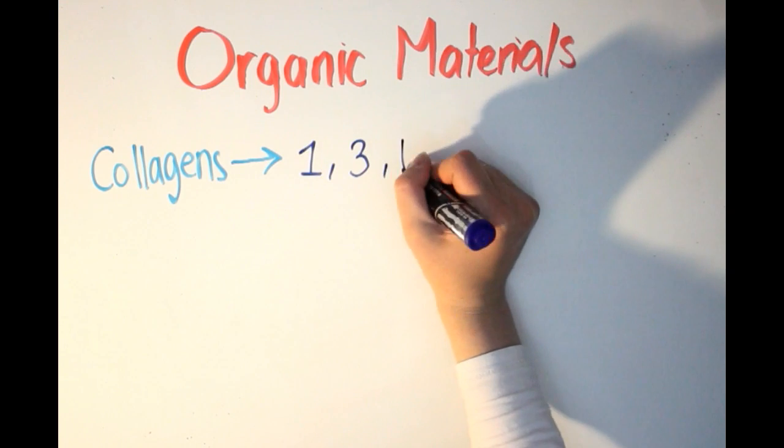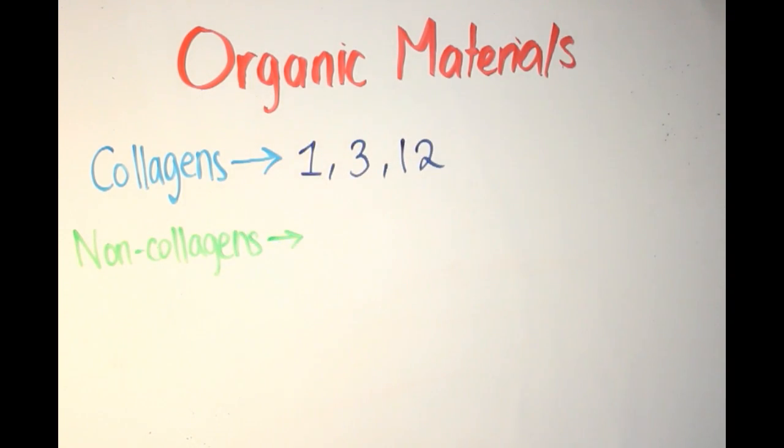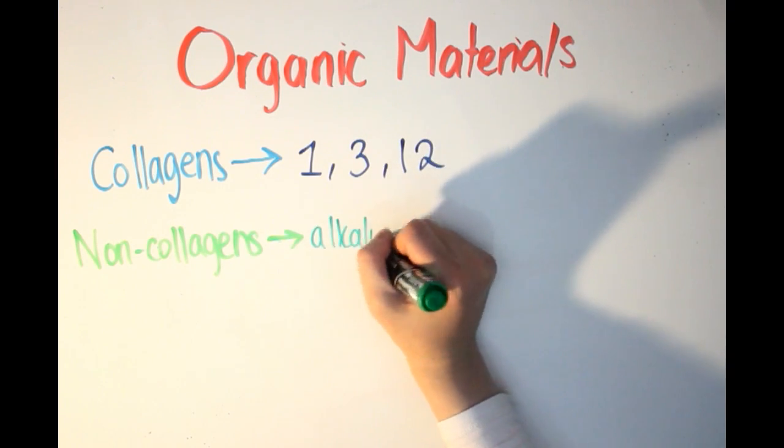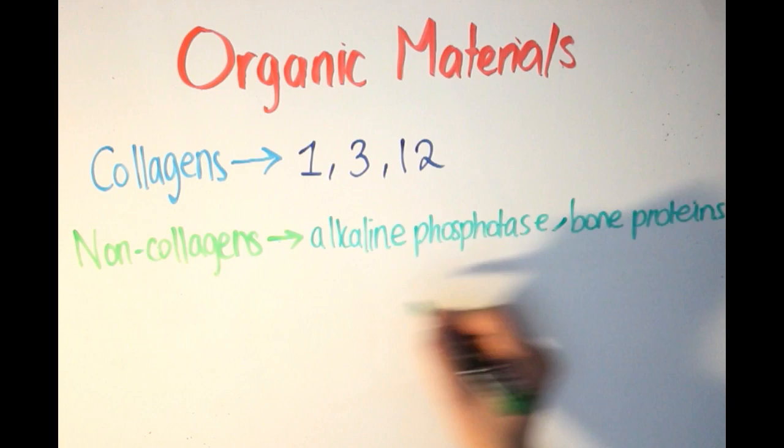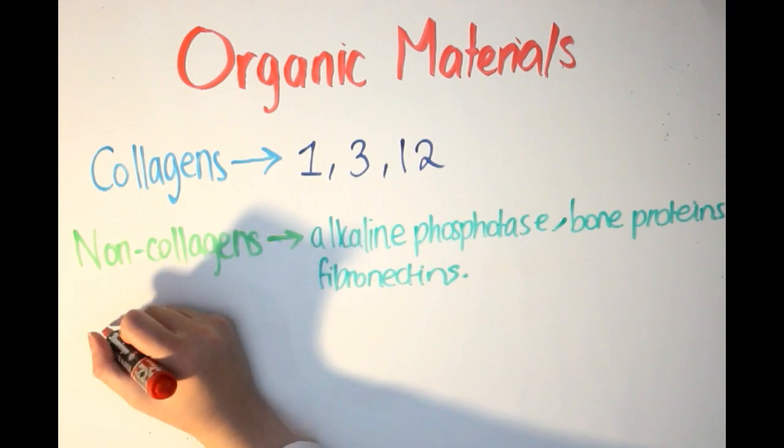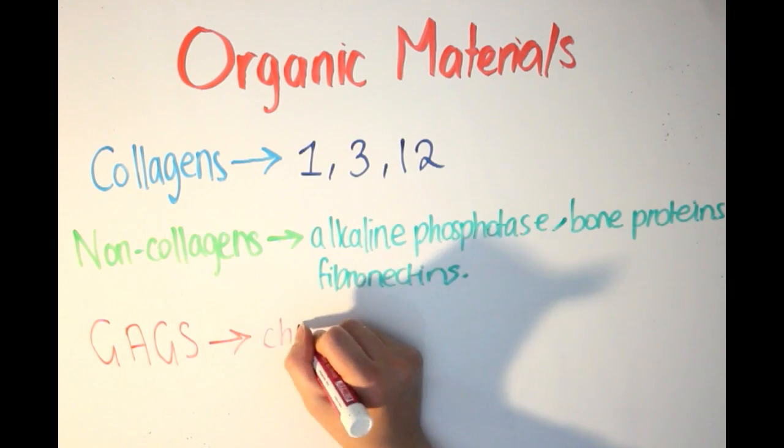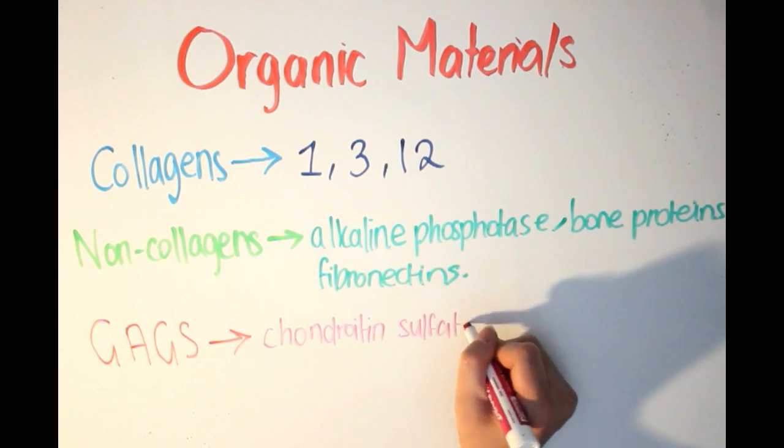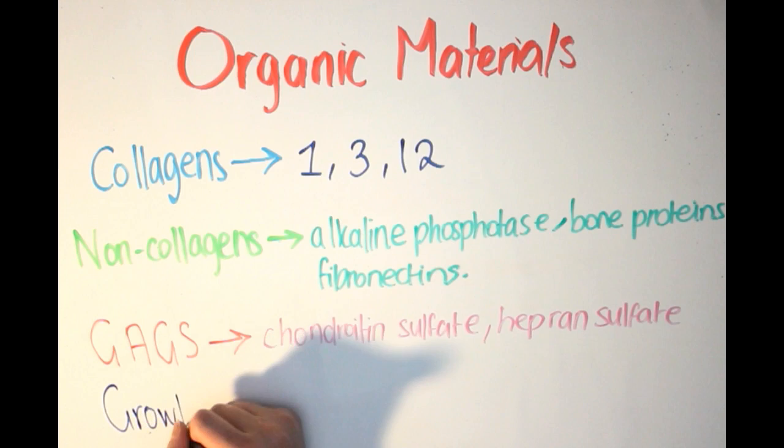Which includes type 1, 3, and 12 collagens, non-collagenous proteins such as alkaline phosphatase, bone sialoprotein, fibronectin, and other bone proteins, glycosaminoglycans such as chondroitin sulfate and heparin sulfate, and finally cementum-derived insulin-like growth factors.